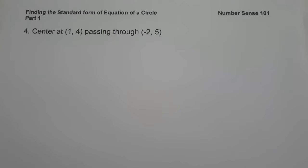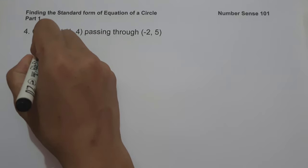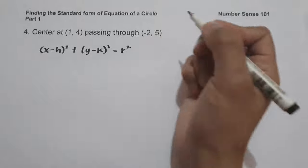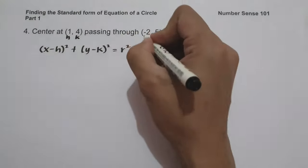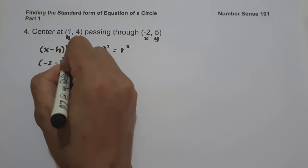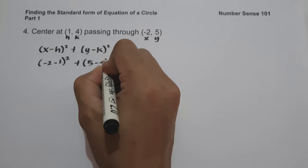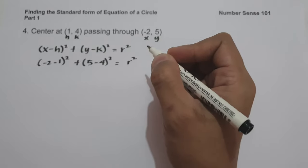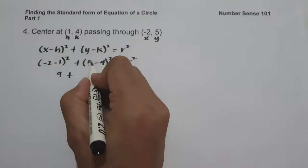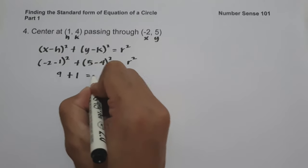On example number four, we have center at (1, 4) passing through (negative 2, 5). To find the standard form, we first identify the radius. Using the first method, we substitute into the standard form: (x minus h) squared plus (y minus k) squared equals r squared. With x = negative 2, y = 5, h = 1, k = 4: (negative 2 minus 1) squared plus (5 minus 4) squared equals r squared. That gives us (negative 3) squared plus 1 squared, which is 9 plus 1, equals r squared.